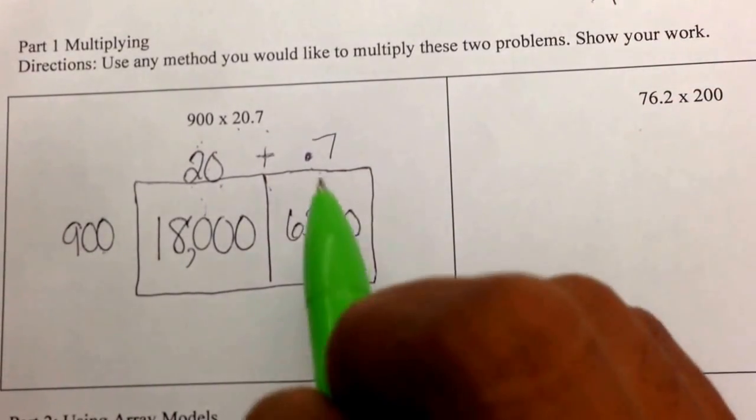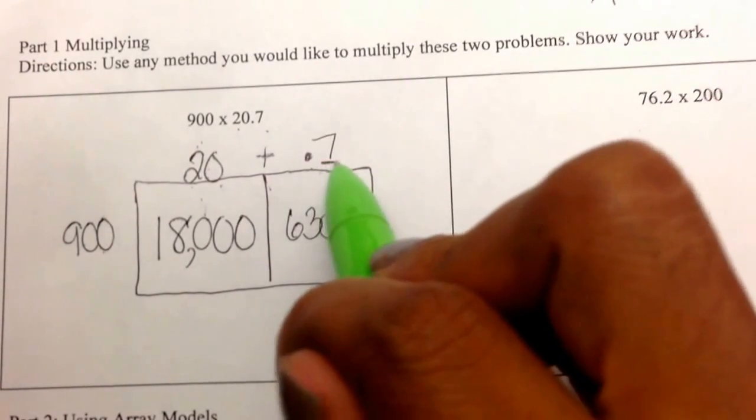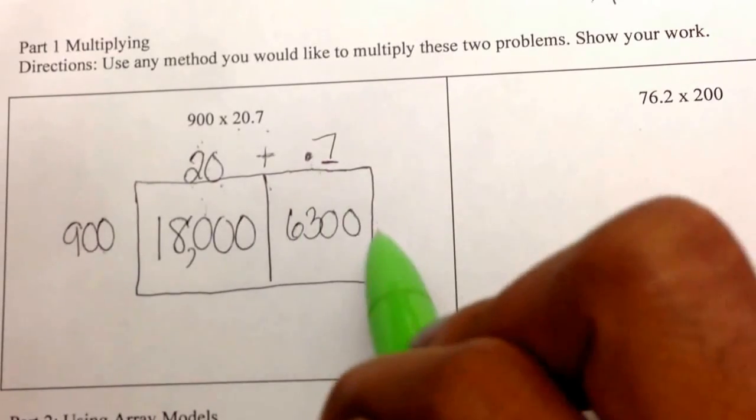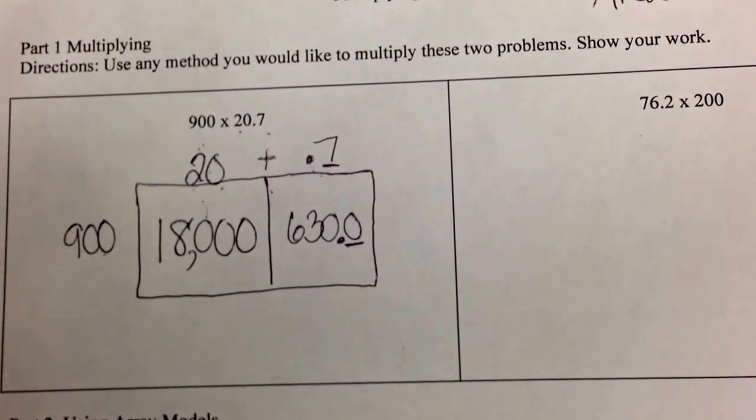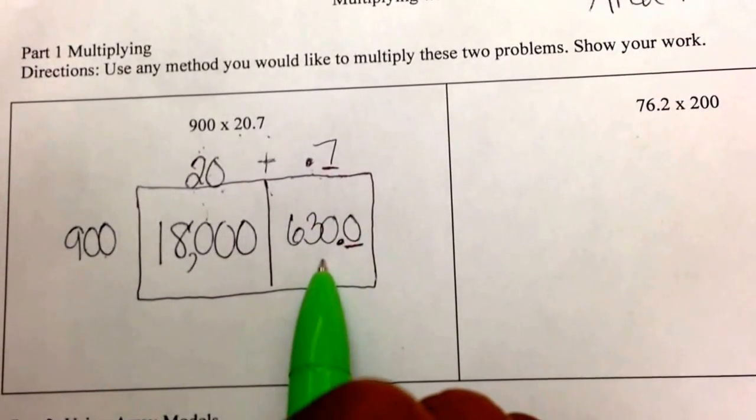Using my rule on decimals from a previous video, I know there is one number behind a decimal, so I need my product to also have one number behind a decimal. So 900 times 7 tenths is 630.